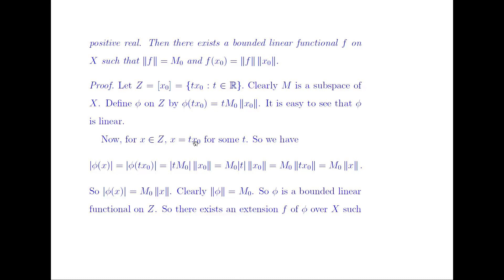This equals modulus of M₀ · norm(X₀) · t, which equals M₀ times modulus of t times norm(X₀), since M₀ is positive. By the definition of norm, this equals |t| · norm(X₀) = norm(tX₀) = norm of X. So |φ(X)| = M₀ · norm(X), and clearly norm of φ is equal to M₀. So φ is a bounded linear functional on Z.